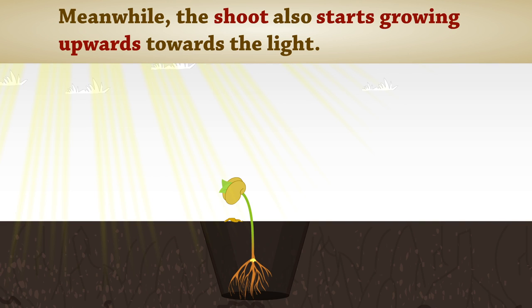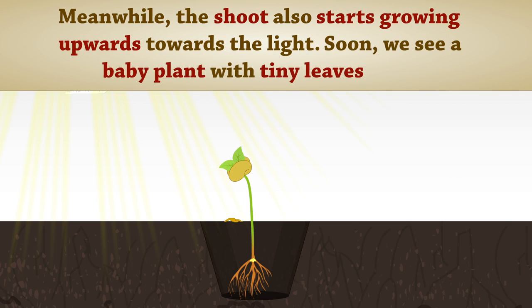Meanwhile, the shoot also starts growing upwards towards the light. Soon, we see a baby plant with tiny leaves.